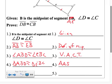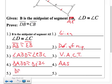And finally, step five, DB is congruent to CB, CPCF.